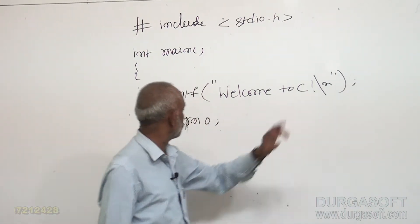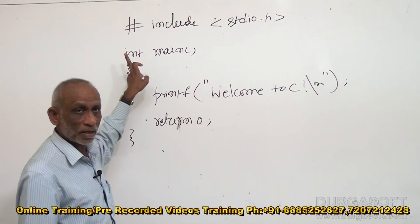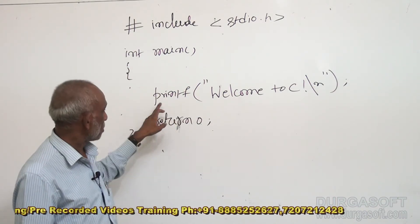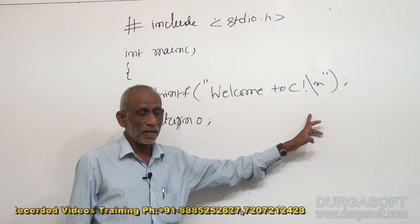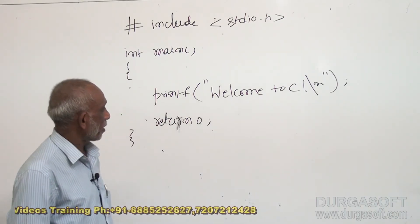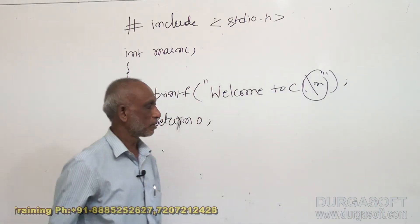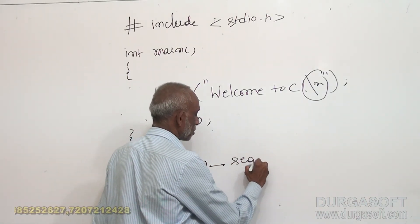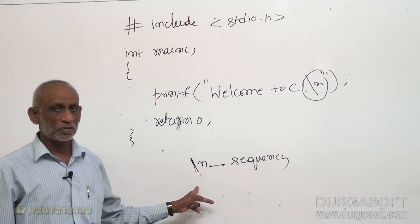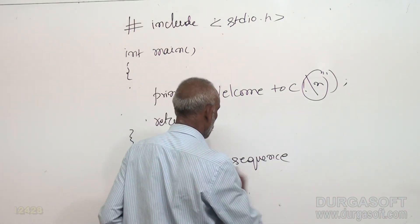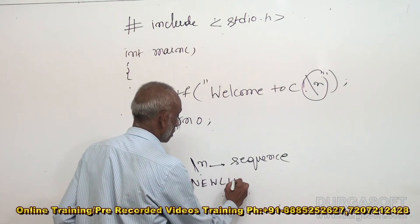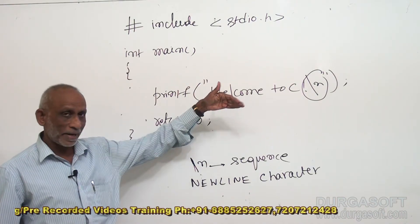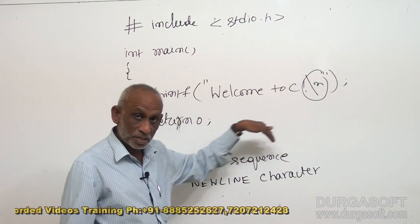That semicolon shows the end of the statement. You can observe return 0 and int here - these two things we will see at a later point of time, right now they are not that much important. What is important currently is the printf statement - printf is displaying 'welcome to C' on the screen. You can see the backward slash n - this is called an escape sequence. It has two characters: backward slash and n. Together it is called a sequence, and it is called the new line character. This is used to give a carriage return after a message - after displaying this message, the cursor goes to the next line.